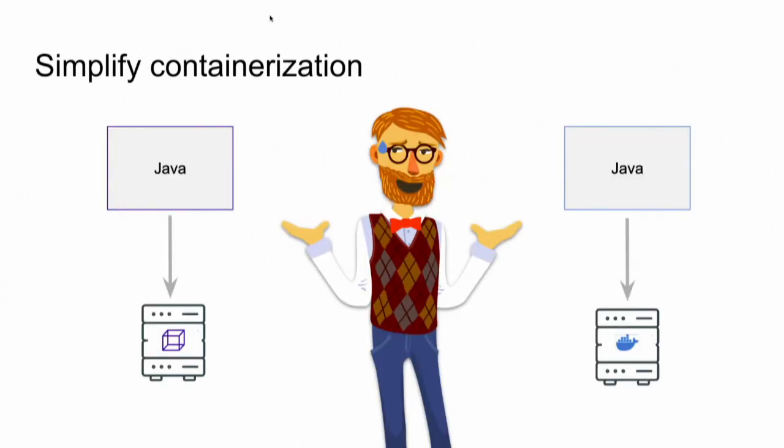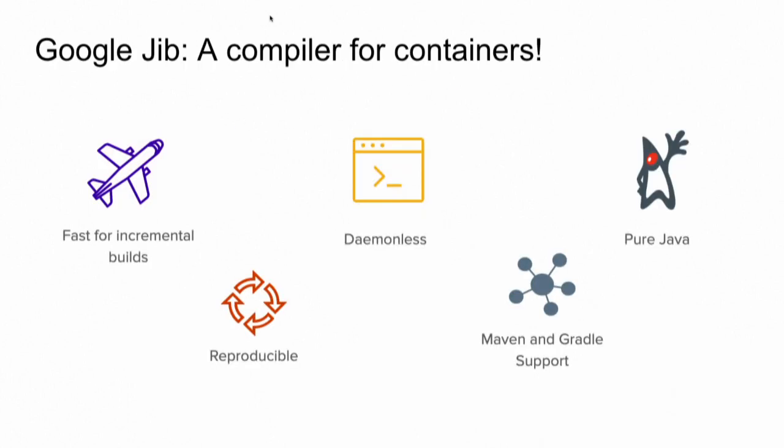The ideal scenario for Java developers is to use the same good old tools we are familiar with, like Maven and Gradle, to build this new unit of deployment — the container. Luckily, there are many tools for that, and in my talk today I will highlight one cool project from Google, which is JIB.